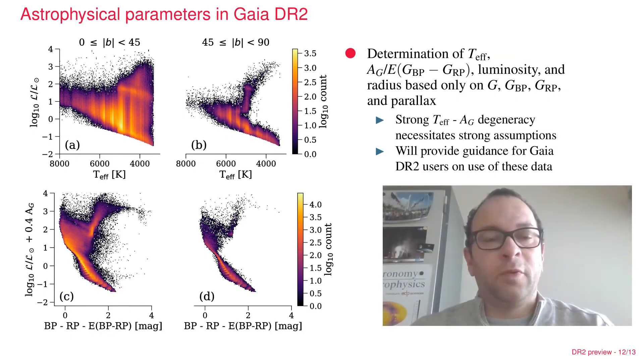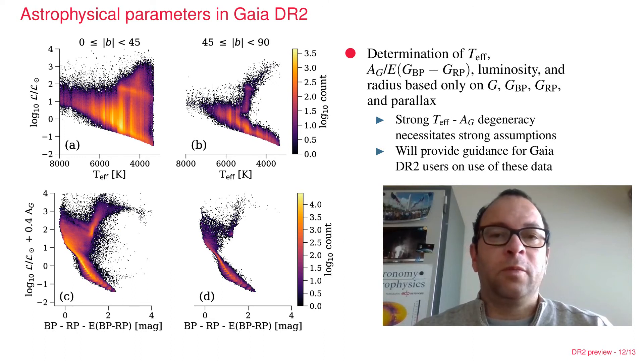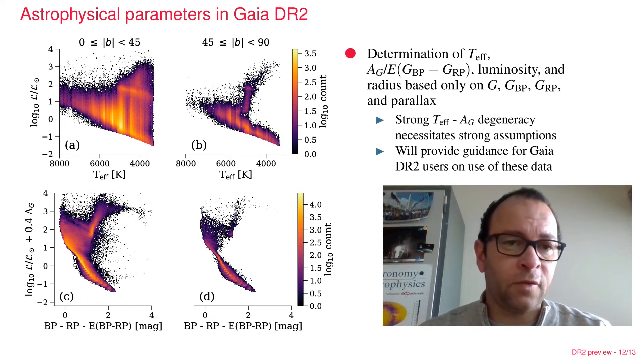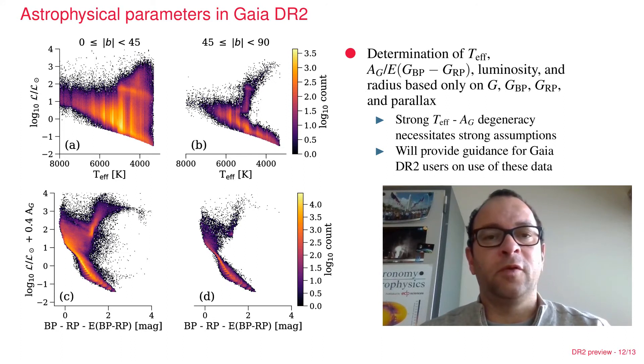These are examples of HR diagrams made on the basis of the luminosities and effective temperatures that were derived for the stars based only on Gaia data, combining the parallaxes and the photometry. The top diagrams show for the galactic plane and regions outside the galactic plane, the luminosity versus effective temperature, where you see still many artifacts that have to do with the fact that this is a first attempt based on very limited data only.